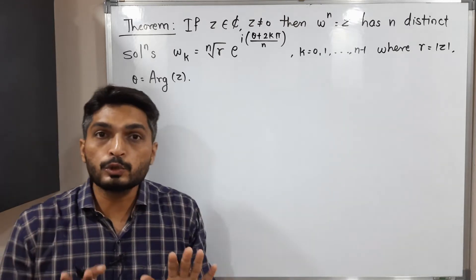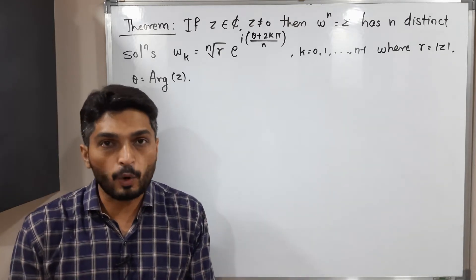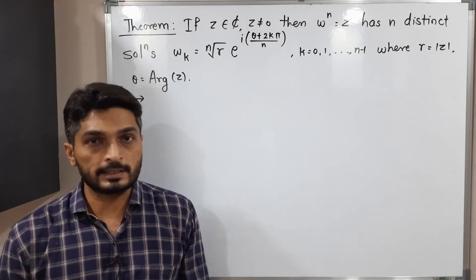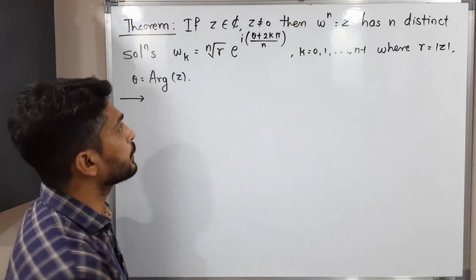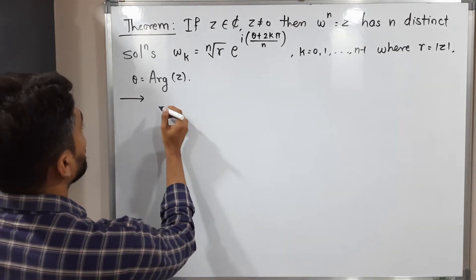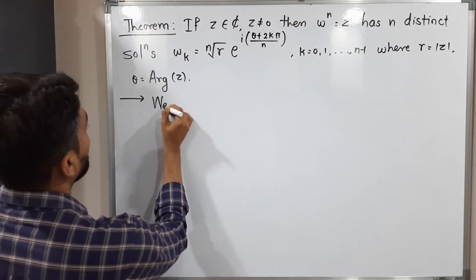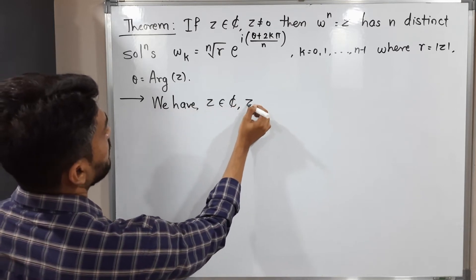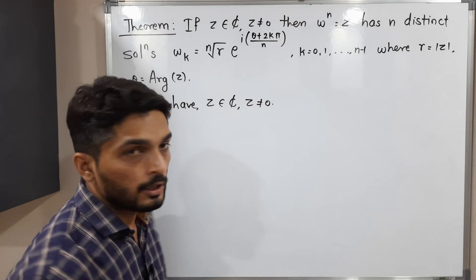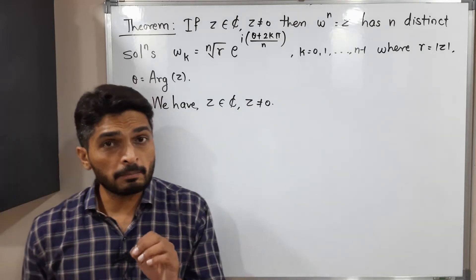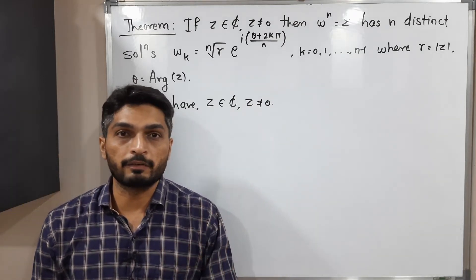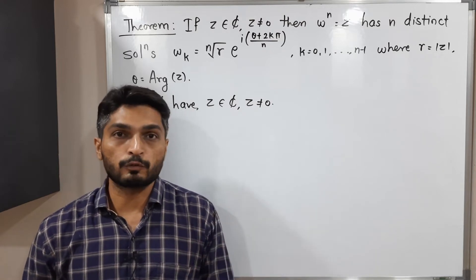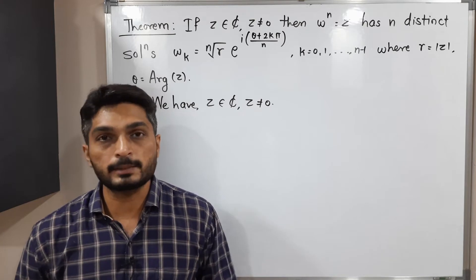Here r and theta have their usual meaning: r means the modulus of Z and theta means the argument of Z. We have to prove this theorem. We will start with the given information. We have Z is a complex number and Z is not equal to zero. You know that any complex number can be represented in three different forms: Cartesian form, polar form, and exponential form. We are going to use the polar form.